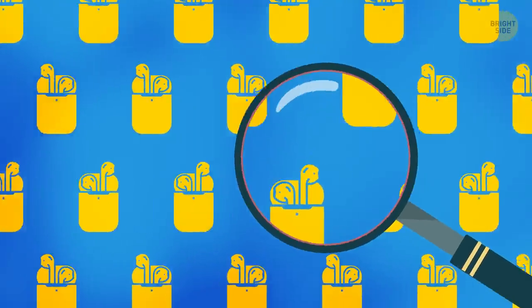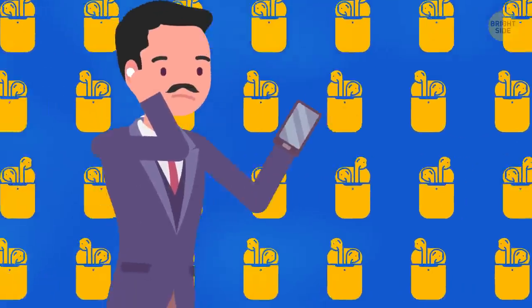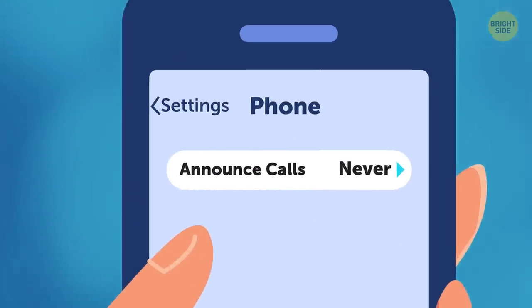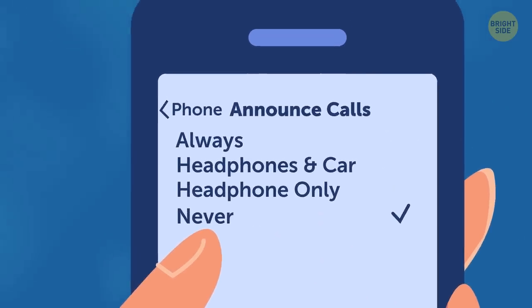Guess I just didn't do my research well. It turns out that you can find out who's calling you without having to look at the screen of your phone. Choose Phone in your settings and tap Announce Calls. After that, pick the option that suits you the most.